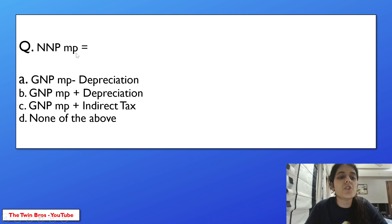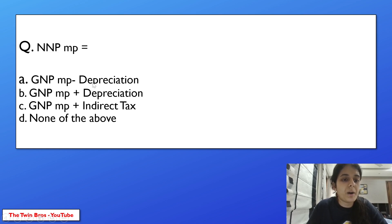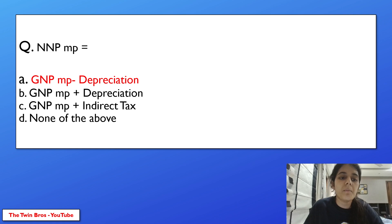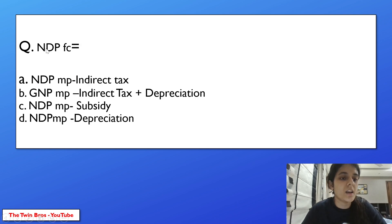NNP at MP, net national product at market price, is equal to — GNP at MP minus depreciation, GNP at MP plus depreciation, GNP at MP plus indirect tax, or none of the above? The answer is GNP at MP minus depreciation. So our net national product at market price is calculated by subtracting depreciation from gross national product at market price.